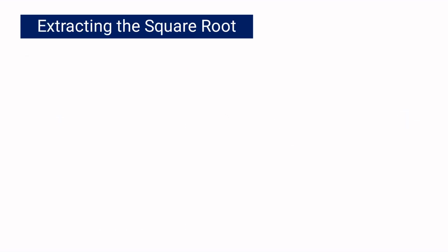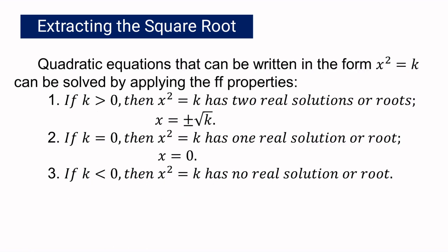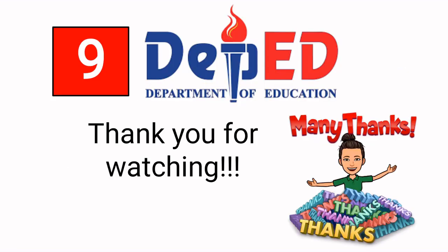In extracting the square root, remember the following properties: if k is greater than 0, then x squared has two real solutions, positive or negative square root of k. If k equals 0, then x squared equals k has one real solution, and x equals 0. If k is less than 0, then x squared equals k has no real solution or root. That's it for today. Thank you for watching.